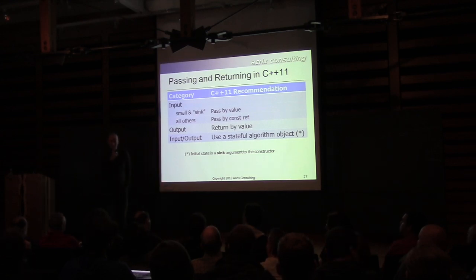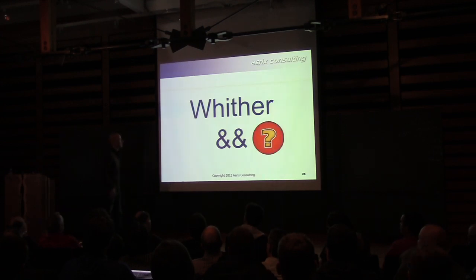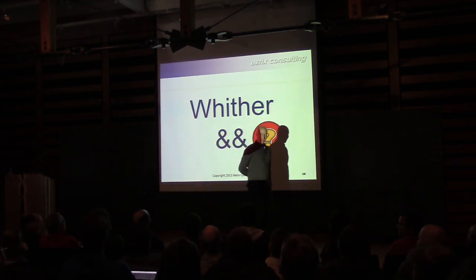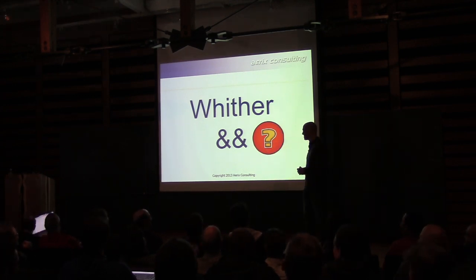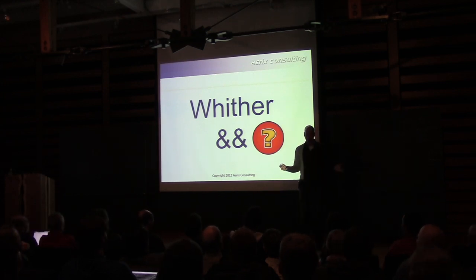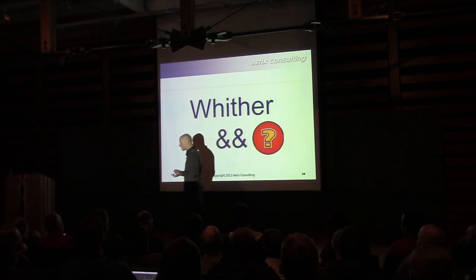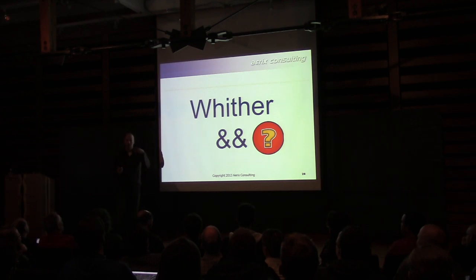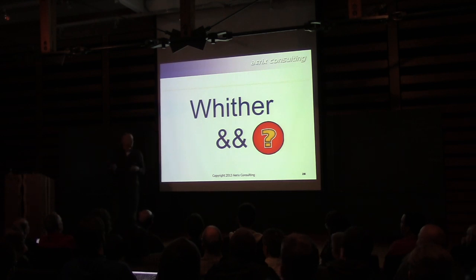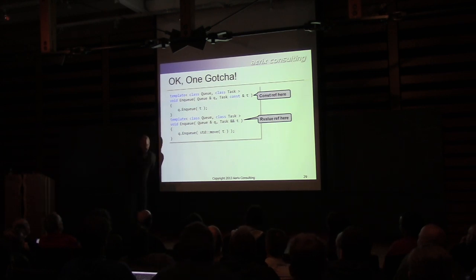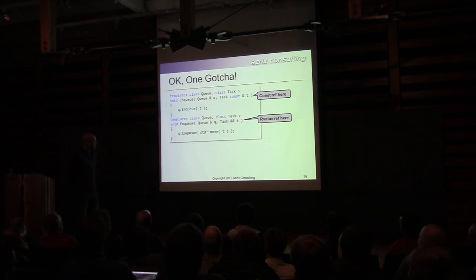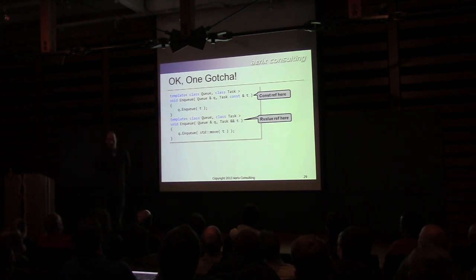Question: when do you use r-value references? You've got this new language feature and the speaker is essentially saying never use it. That's not quite true — you do need it in exactly two and a half places: to implement move constructors, to implement move assignment operators, and for perfect forwarding. The speaker will talk about why you shouldn't use r-value references otherwise. Here's a gotcha you all need to know.